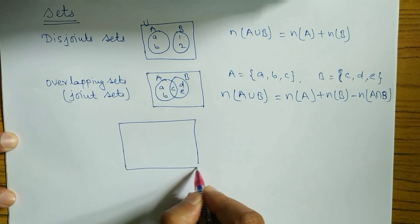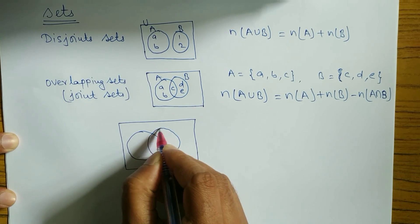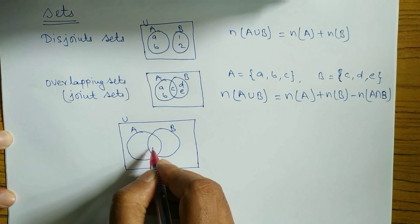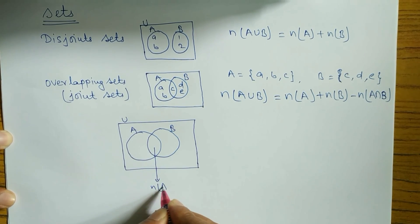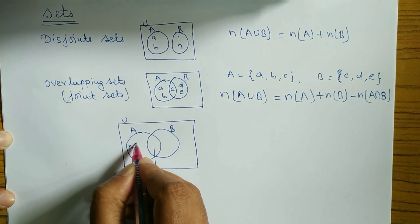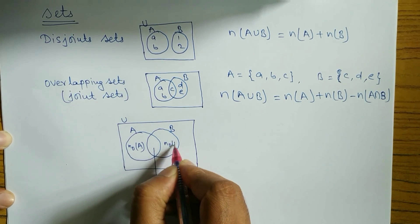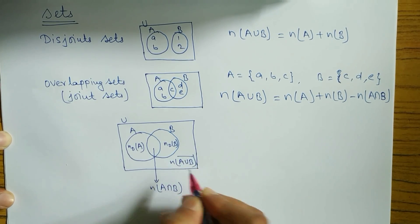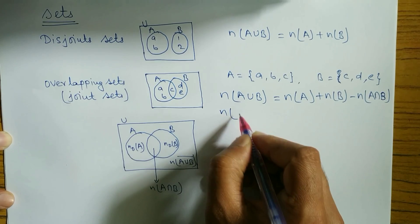Now let me show the diagram once again so you can understand properly. This one is A, this one is B, and here is U. This part in the middle is known as n(A∩B). This part on the left is known as n(only A), and this part on the right is known as n(only B). The outer part is known as n(A∪B) complement.